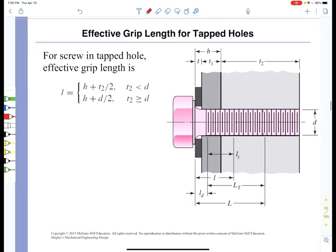The effective grip length for tapped holes: this is showing a bolt, a washer faced bolt with a washer underneath it. It is clamping a top plate of thickness T1 to a bottom plate of thickness T2 using a bolt with a nominal diameter of D and we have to sort out what the grip length happens to be.